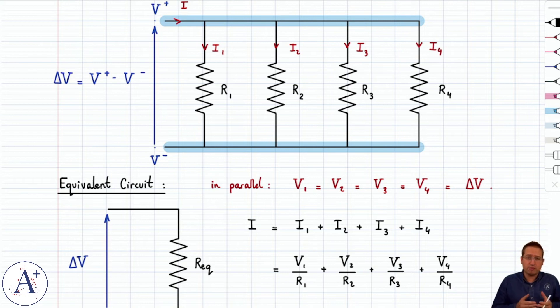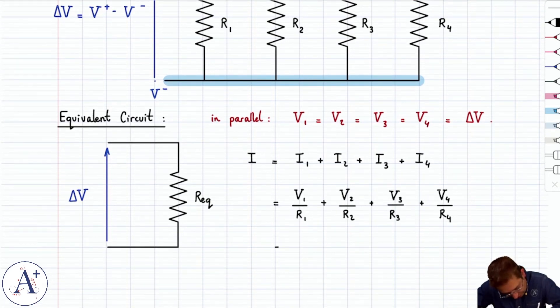We know, though, that V1, V2, V3, and V4, they're all the same. They're all equal to delta V. So what do we have? We have delta V divided by R1 plus delta V divided by R2, and so on and so forth.